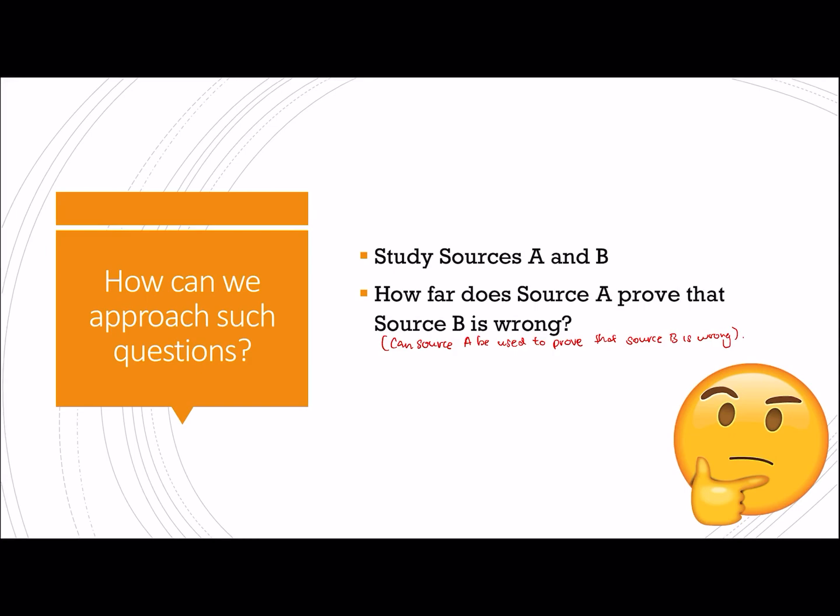So what this question is really trying to ask you is that when we cross refer source A and B, can we therefore straight away prove that source B is wrong already? The focus of this question is about whether source A is able to do that.